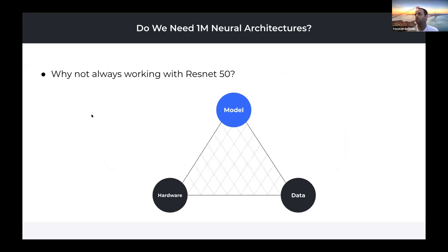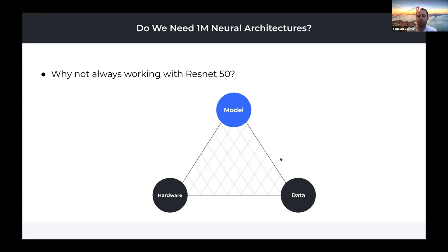So why do we need so many neural architectures? Why can't we just use ResNet-50 for everything? This is probably a naive question, but let's try to understand. We build models for different types of data, different types of tasks, and different types of hardware. Let's start with the connection between the model and the data — different data requires different feature extraction and learning different things.